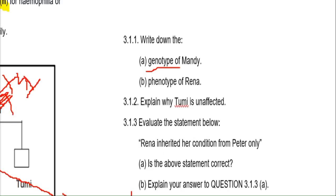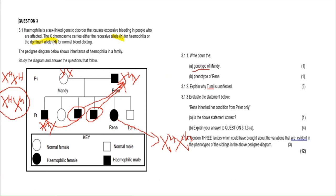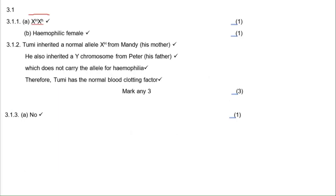Part B asks for the phenotype of Reina. Phenotype means what you physically see — does she have hemophilia or is she normal? You can get this directly from the diagram key: a dark circle means hemophilic female, a white circle means normal female. Reina is a dark circle, so her phenotype is hemophilic female. You don't need to mention genes or X and Y for phenotype — just write 'hemophilic female.'